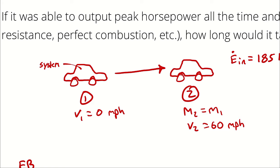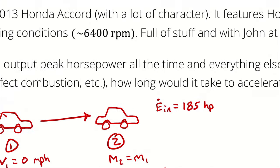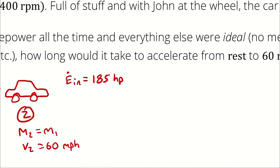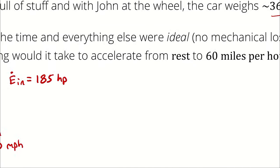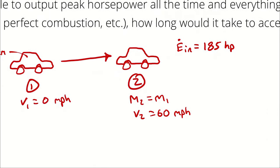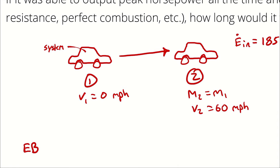Is time important is really what that comes down to. In a steady process, all effects of time are neglected — the situation is the same regardless of when you look at it. In a transient process, time is important. Is this a steady process or transient process? It is transient — we know time is important because the problem is asking us for a duration: how long it would take to accelerate from rest to 60 miles per hour.